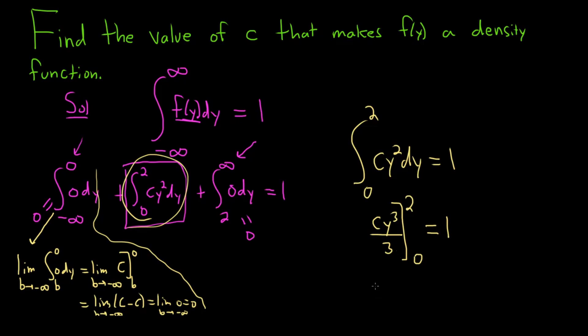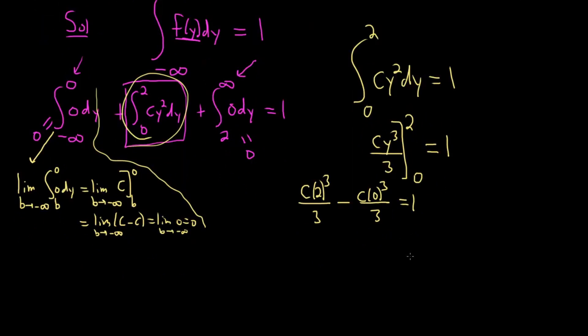Then you plug in the 2, so you would get c times 2 cubed over 3. Then you subtract, so you get c times 0 cubed over 3, and that's equal to 1. 2 cubed is 8, so we're going to get 8 thirds c. And this whole piece here will be 0 because of the 0. So 8 thirds c is equal to 1.